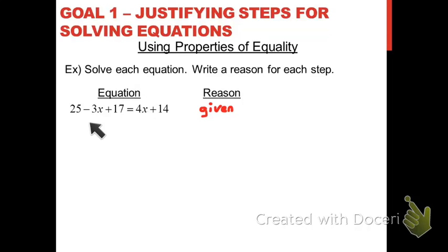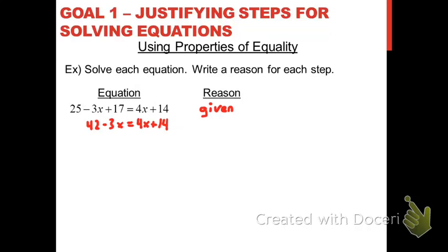If you're trying to solve this equation, the first thing you'd want to do is simplify the expression on either side. There is some simplifying on the left side — let's combine like terms: 25 and 17 together add up to 42. So we can now say the equation is 42 minus 3x equals 4x plus 14. An important note: we did not use the addition property of equality here because we didn't add the same value to both sides — we only worked on one side. Anytime you just combine like terms or simplify a single side of the equation, the reason is simply 'simplified.'